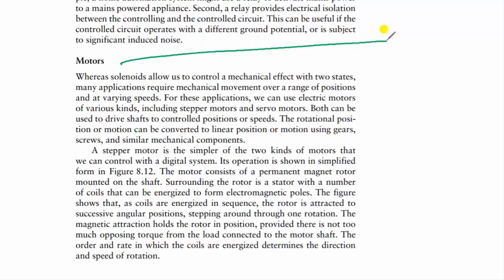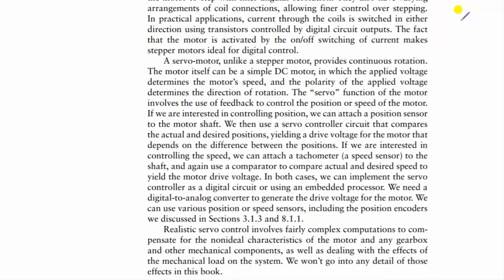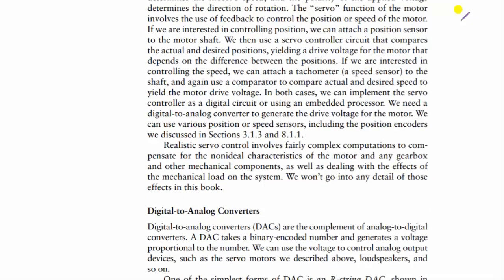Let us talk about motors. There are three variants: stepper motor, DC motor, and servo motor. A stepper motor has fixed increments and lower rotation speed — example: a wall clock. A DC motor is used for robot navigation wheels, as speed is directly proportional to the applied voltage. A servo motor is used to move a robot's arm or leg, since precise movement can be controlled with servo motors.